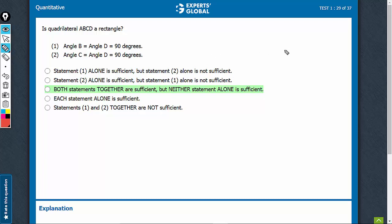Statement 1 says angle B and angle D are 90. So, A, B, C, D. One may just think that if B is 90 and D is 90, when you expand, it's going to be a rectangle.